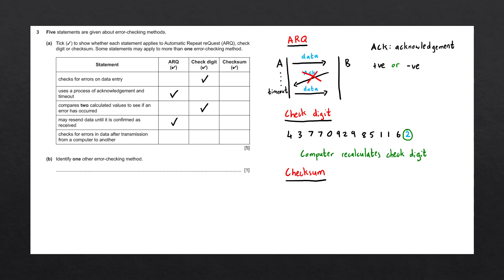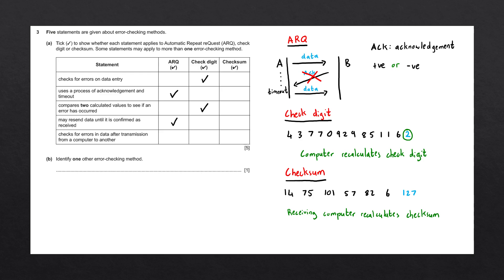The last method is the checksum method, which works very similarly to the check digit but is used for data transmission. We split data up into packets and represent those packets as numbers — for example, 14, 75, 101, 57, 82, and 6. We apply an algorithm similar to the check digit algorithm to produce a checksum value, for example 127. We add this checksum to our packets and send everything to the receiving computer. The receiving computer does the same calculation and compares its checksum value to the received one — if they match, all the data sent is correct. This generated value is called the checksum.